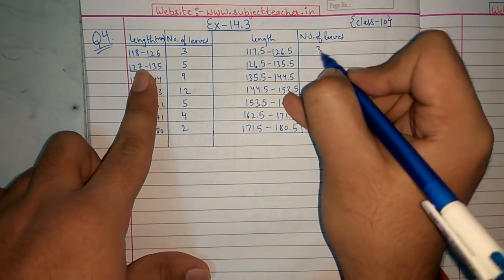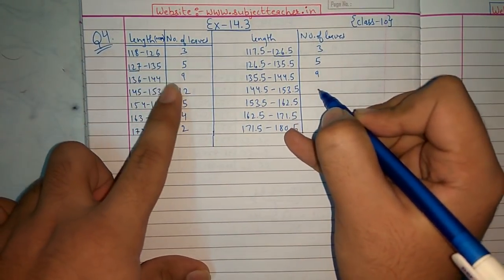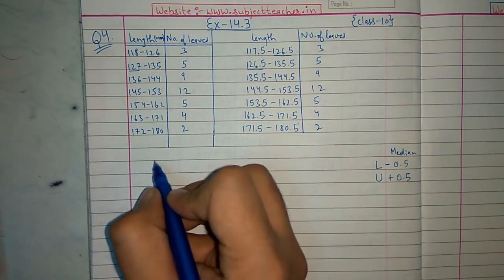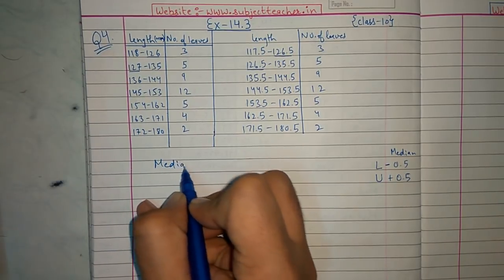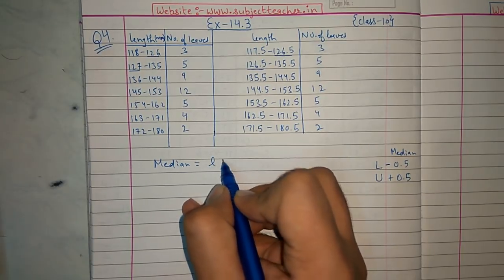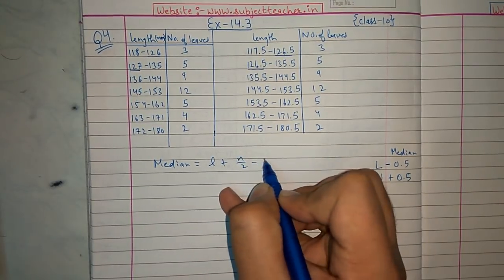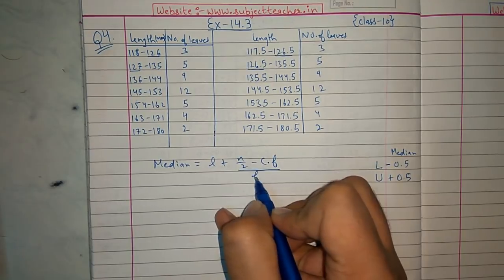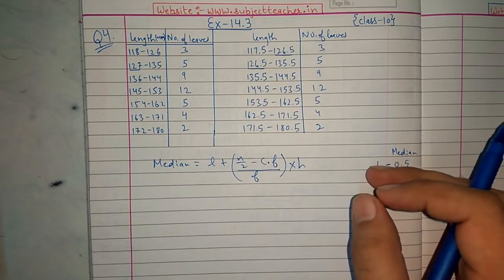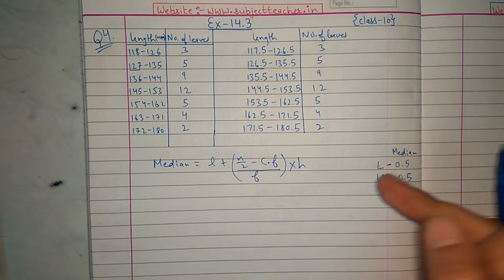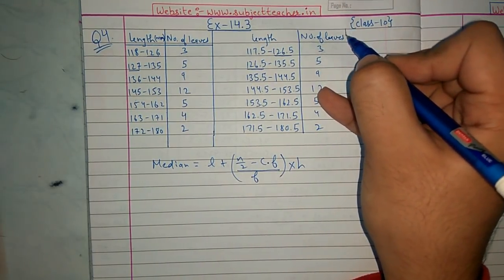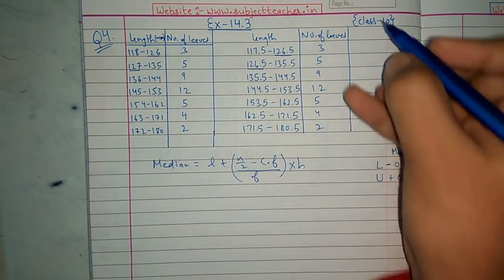The number of leaves (frequencies) for each class are: 3, 5, 9, 12, 5, 4, 2. Whenever I need to find the median, first I write the median formula: L plus (n/2 minus cumulative frequency CF) divided by f, into h. Then I remember I need the cumulative frequency, so I build the CF table here.